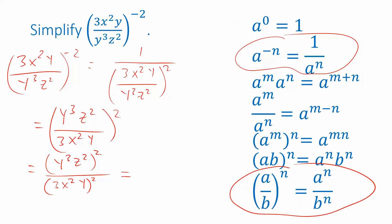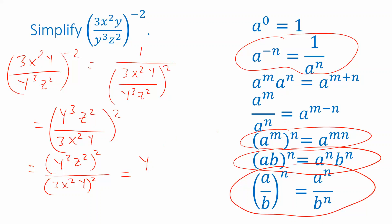Finally, I want to simplify by getting rid of the remaining parentheses. I have y cubed z squared, quantity squared — two things multiplied together raised to a power — that looks like this property. So I can write that as y cubed squared, and combining with the power of a power property, y cubed squared is y to the sixth, and z squared squared is z to the fourth. In the denominator, I'll distribute the exponent: 3 squared is 9, x squared squared is x to the fourth, and y squared.